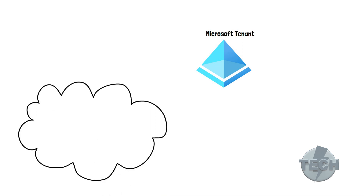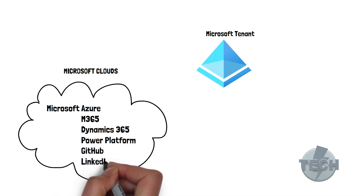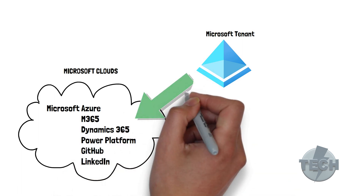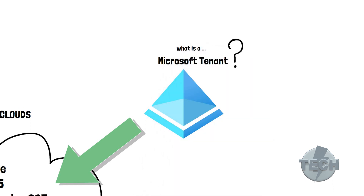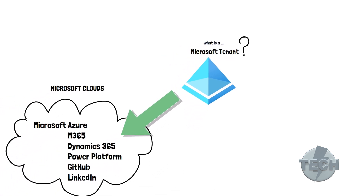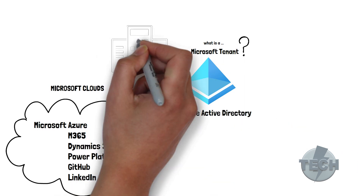Before we start talking about a tenant, it's important to know the different types of clouds within Microsoft. There are about six clouds and each of these more or less make use of the same Microsoft tenant. A tenant within Microsoft is one instance of Azure AD. Usually an organization has one tenant which is used by all the different clouds within Microsoft, as seen on the picture, such as Microsoft 365 for workplace services.